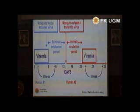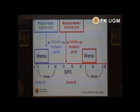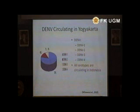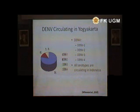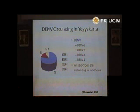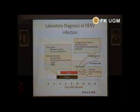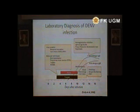Bali is number one in Indonesia for dengue. The trend of dengue cases and deaths is increasing, and the affected area is expanding. In dengue, we must consider two sides: the extrinsic incubation period in the mosquito and the intrinsic incubation period in the patient — meaning we need to address both vector and human factors.